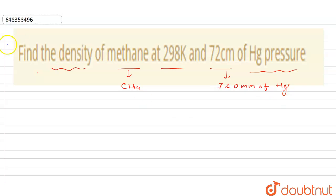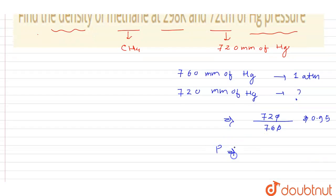First, we will convert the pressure. 760 millimeter of mercury equals one atmosphere. When we calculate this, 720 mm Hg comes out to approximately 0.95 atmosphere. So the pressure in this question is 0.95 atm.